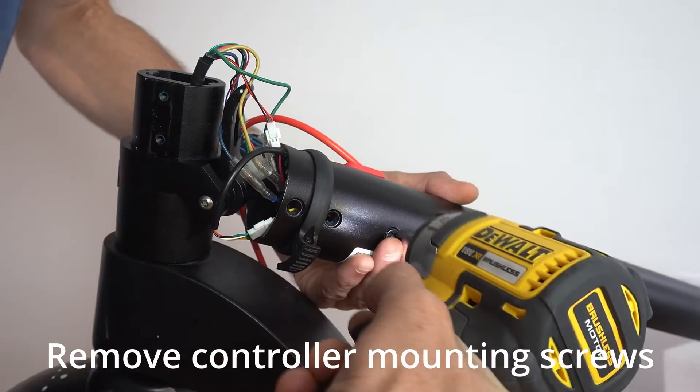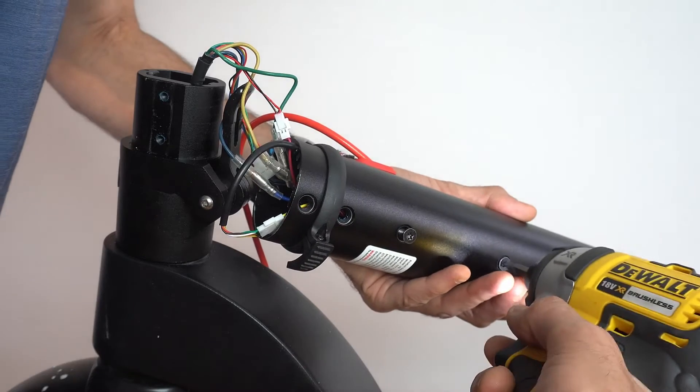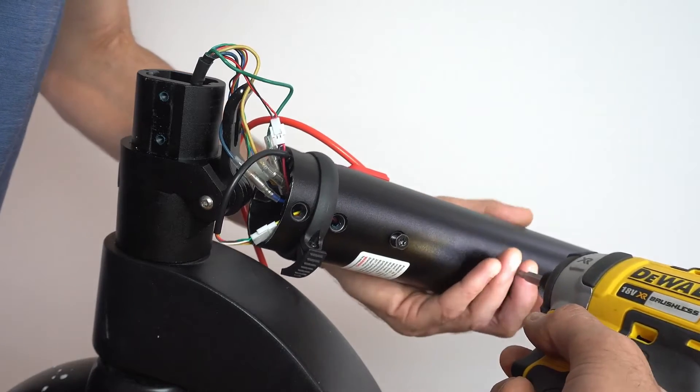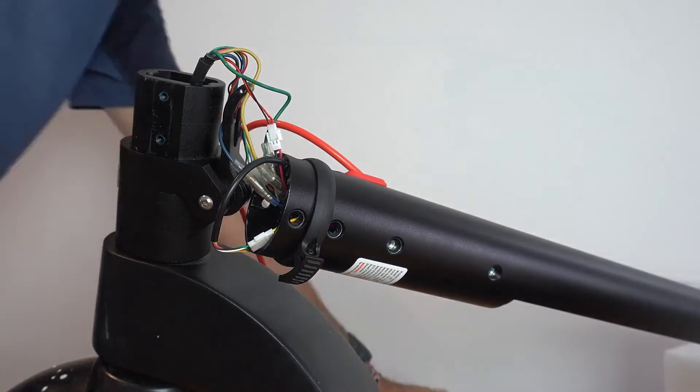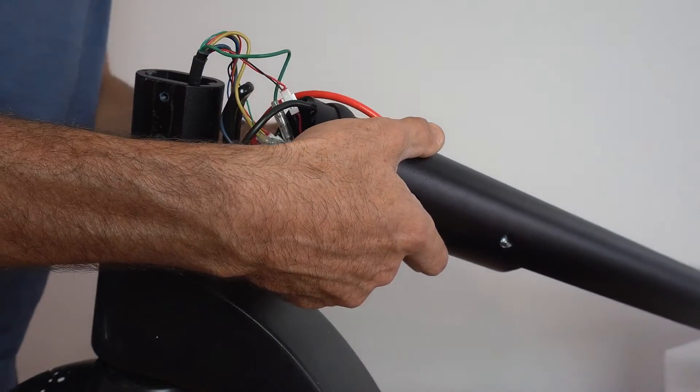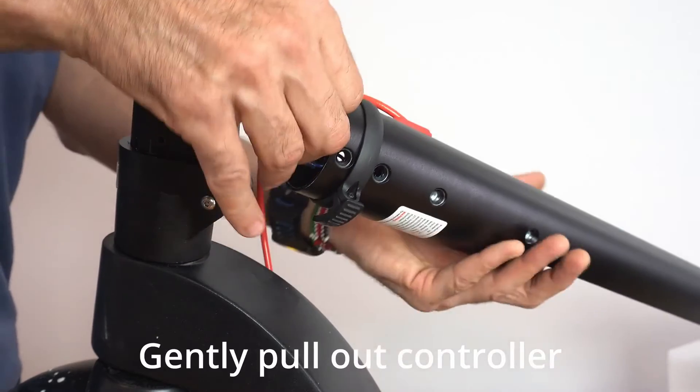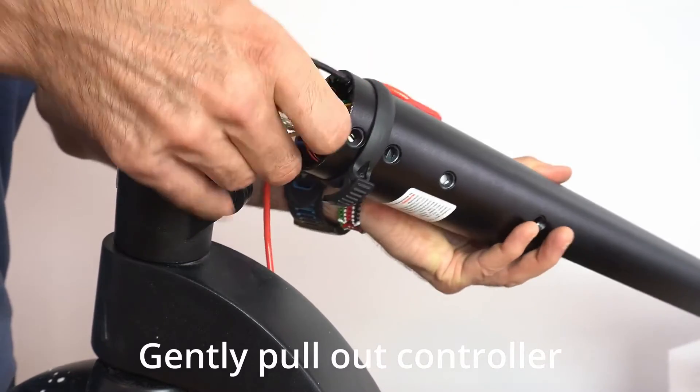You can now remove the four remaining screws that hold the controller to the stem. Once the screws are removed, you can carefully pull out the controller.